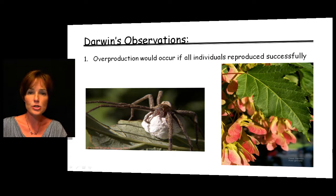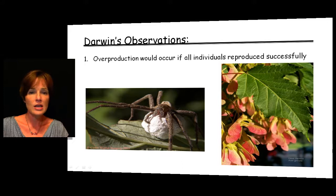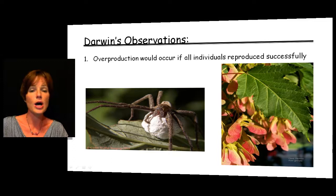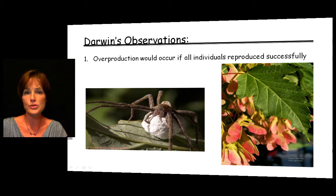This overproduction occurs with humans as well, or has been proposed to. Thomas Malthus proposed and wrote a book about famine and disease really taking a toll on the human population. His main point was that when the population becomes too large, one of these catastrophes takes place. So that was Darwin's first observation: if every one of the offspring were to survive, we would have way too many individuals.